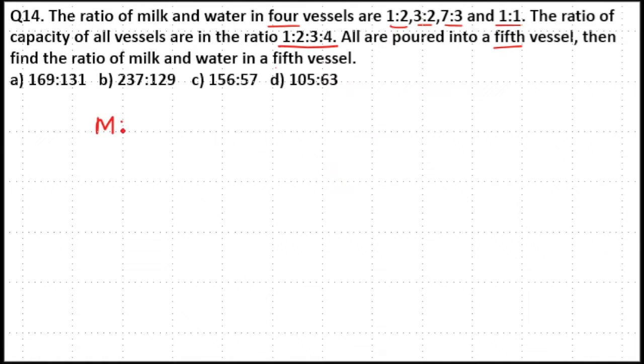So we have milk and water in four vessels in the ratio 1:2, 3:2, 7:3, and 1:1. Now 1 plus 2 equals 3, 3 plus 2 equals 5, 7 plus 3 equals 10, and 1 plus 1 equals 2.